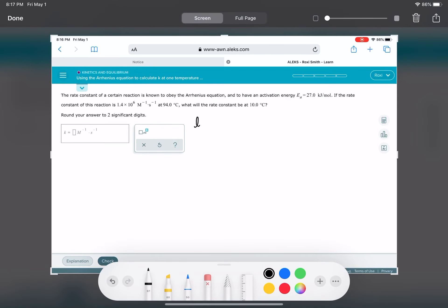So as a reminder, that is ln K1 over K2 equals E sub A, the activation energy, over R, times T1 minus T2 divided by T1 times T2.